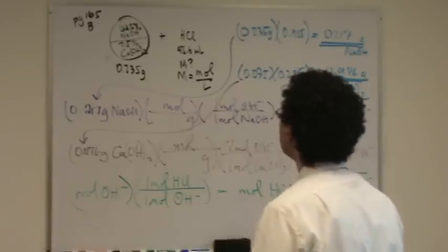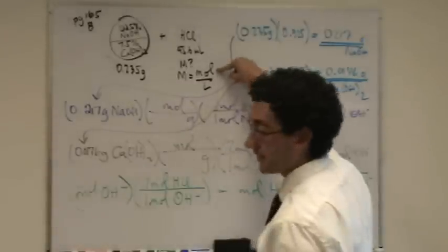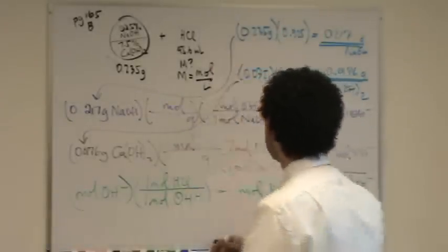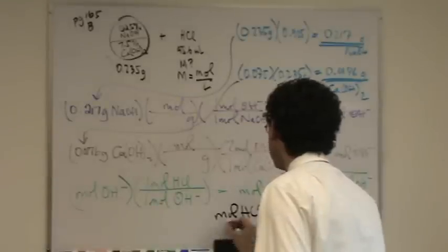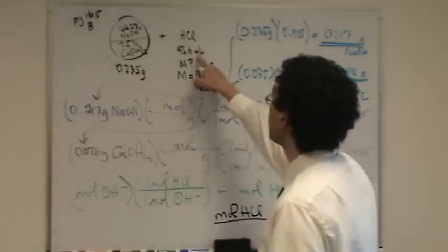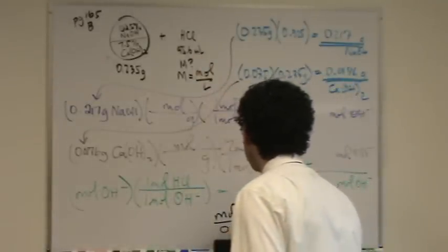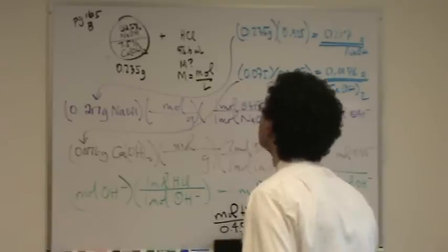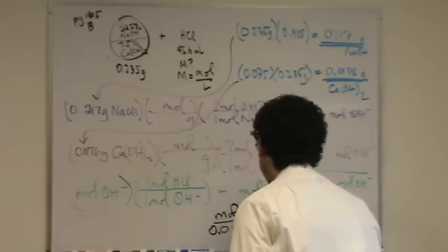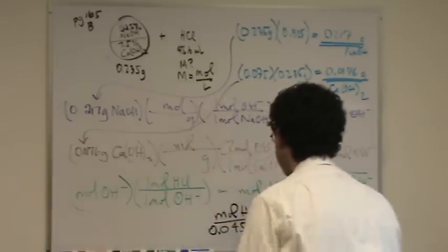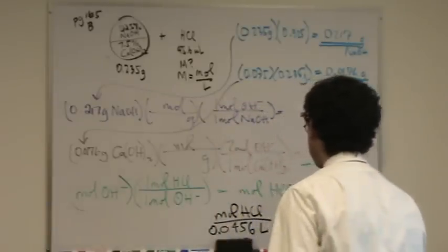Then I take that number, that's this number right there, the top, I divide it by that. So moles of HCl divided by this in liters, 0.0456 liters. And that's my answer. Cool.